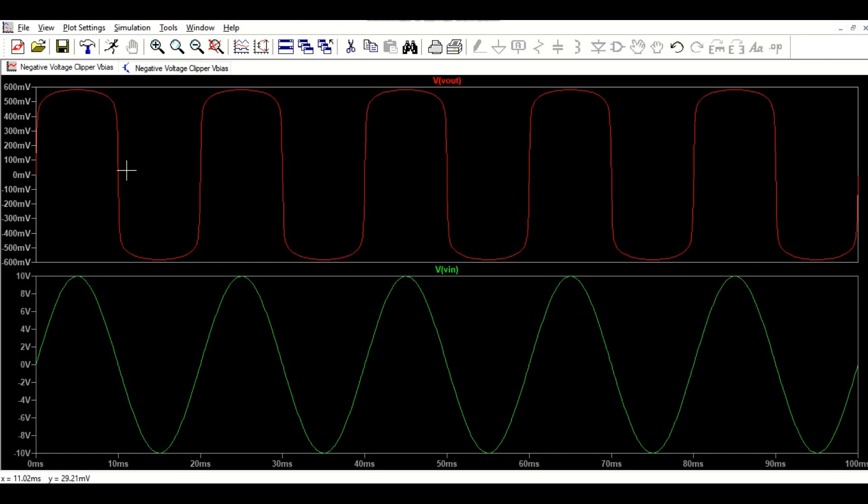Then it goes back. The same thing happens with the negative half cycle after zero crossing. It goes down and most of the voltage is clipped off. Here we are getting minus 600 millivolts and 600 millivolts to minus 600 millivolts peak to peak voltage.